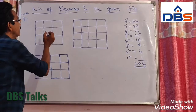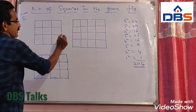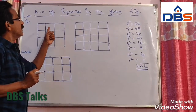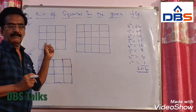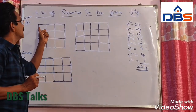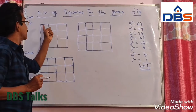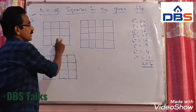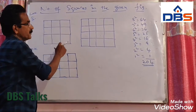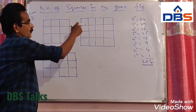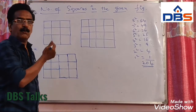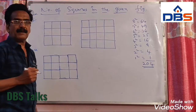If the figure is like this, where the number of rows and columns are equal — I am considering this as the first case, where rows and columns are equal. There are 3 rows and 3 columns here, and 4 rows and 4 columns here. If the given figure is like this, then how to count the number of squares?